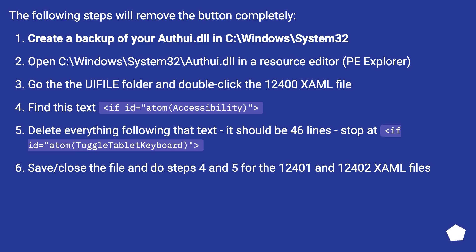Delete everything following that text — it should be 46 lines. Stop at: if i.d.equals atom toggle table keyboard. Save and close the file, then do steps 4 and 5 for the 12401 and 12402 XAML files.